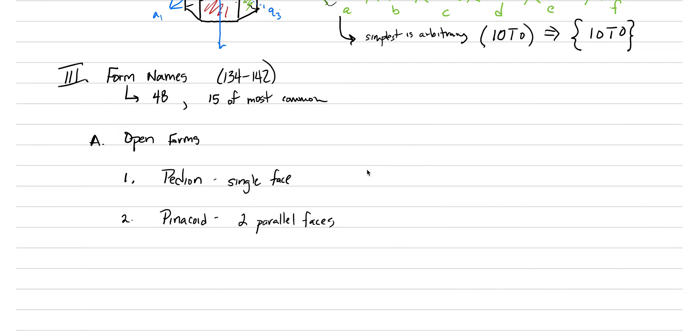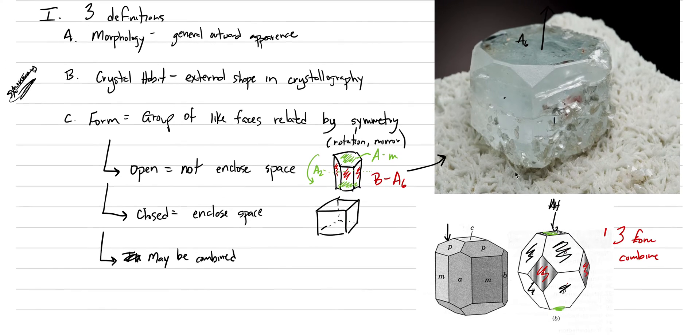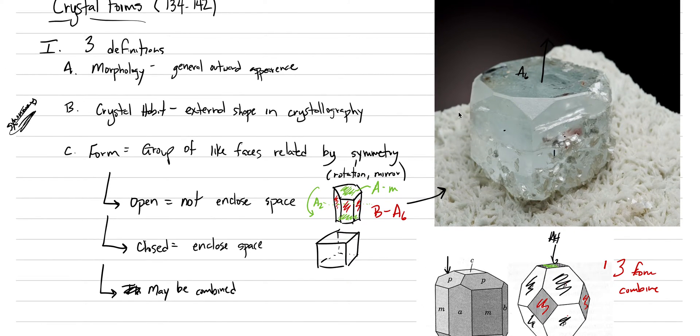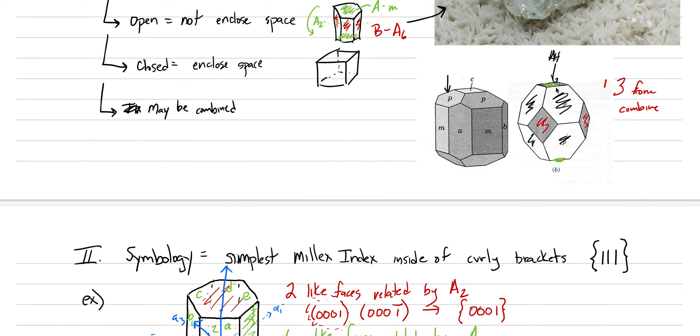If we were to draw a pedion as a single face, maybe we draw something like this, with imaginary axes creating three dimensionality for us. A pinacoid would be something like this, where you have two faces that are parallel to one another. Both of these must be combined with other faces in order to create a crystal. In this example, this single face right here is a pedion. Here we have this one in green, and we know there's one here at the bottom. They're parallel to one another. There's only two of them. That's a pinacoid.